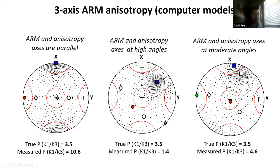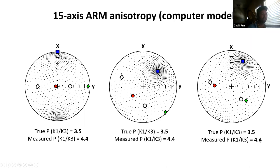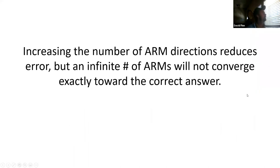I repeat this model using the same three anisotropies but now with 15 partially activating ARMs. In this case the directions were all estimated well, but the anisotropy is still a little high. What I see is that increasing the number of ARM directions reduces error, but an infinite number of arms will not converge exactly toward the correct answer.